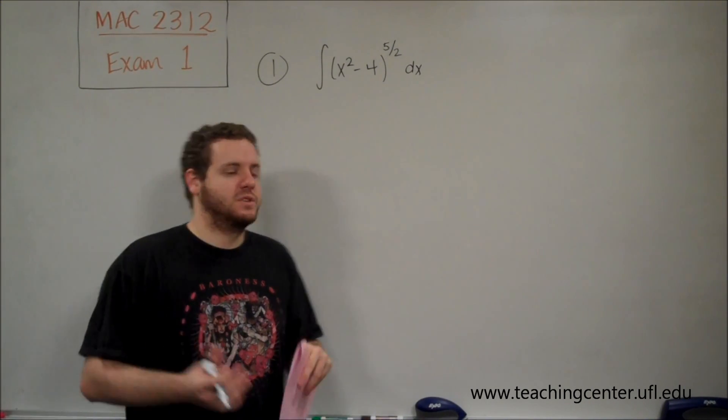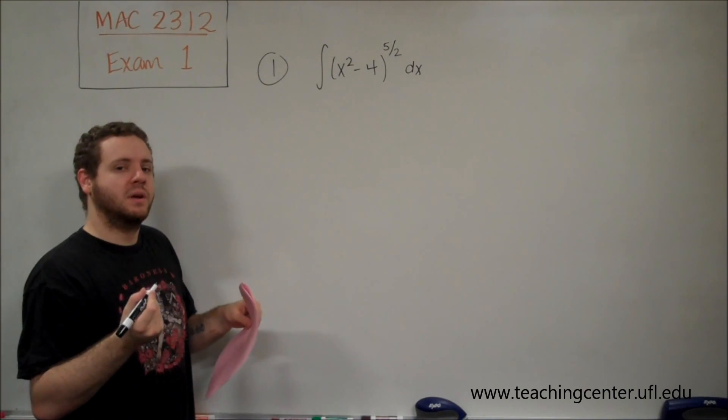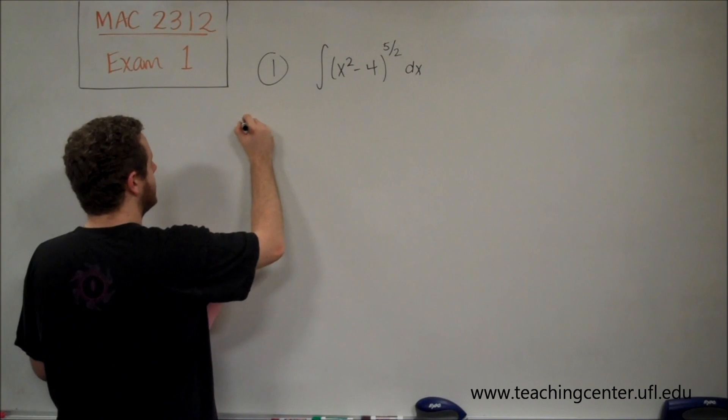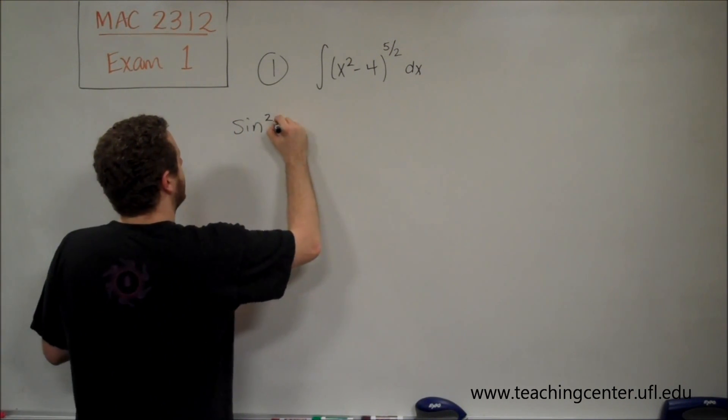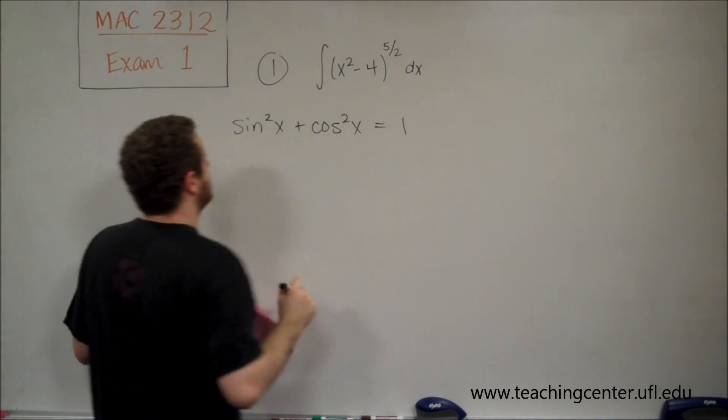But I'll show you how we get that for this problem here. So remember that the identities that you're going to be using in these cases are sine squared plus cosine squared equals 1.